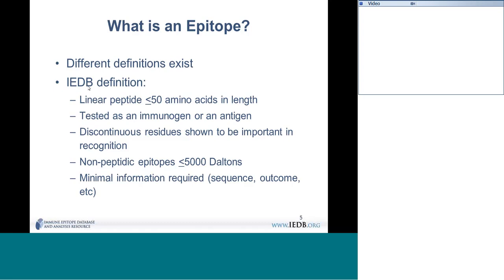We also capture residues shown to bind to antibodies — those are captured as epitopes. We also have non-peptidic epitopes: carbohydrates, metals, lipids, and joints. Our upper size limit is around 5,000, and for data to be included in the database we need a minimal amount of information.